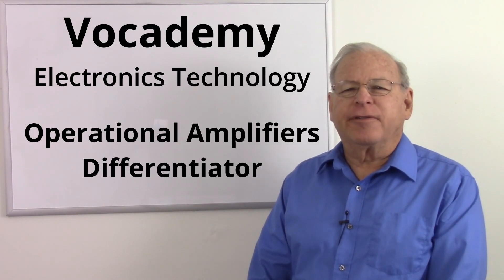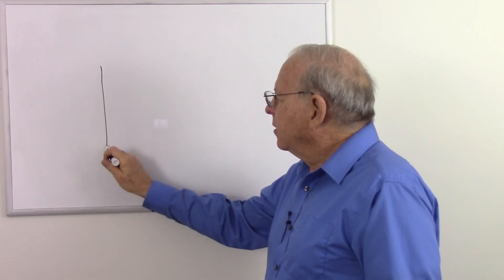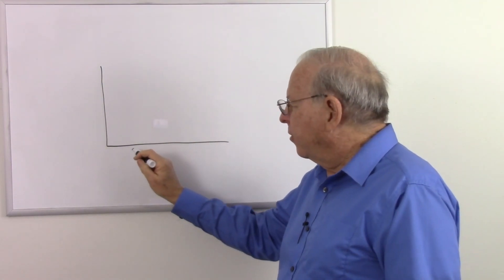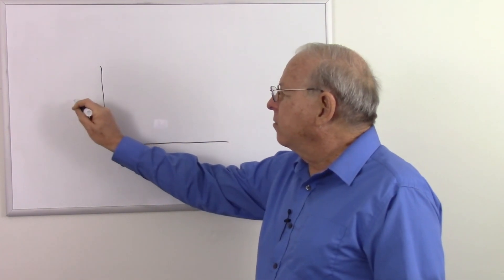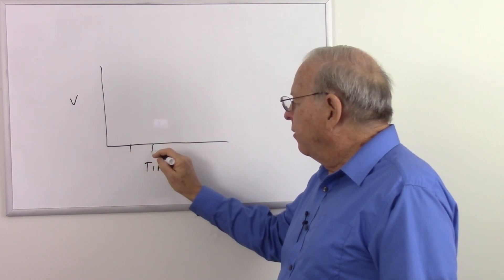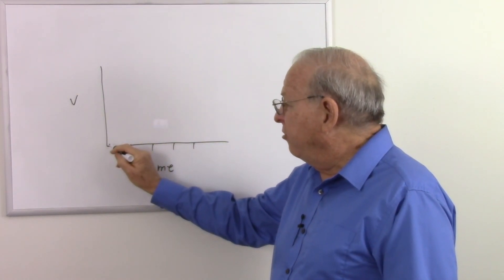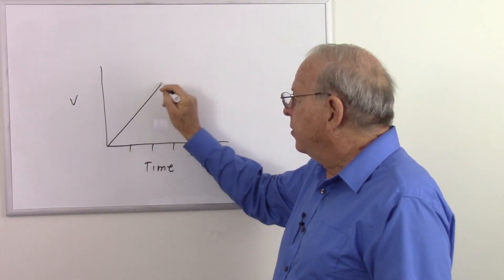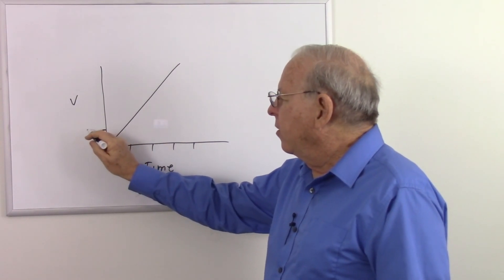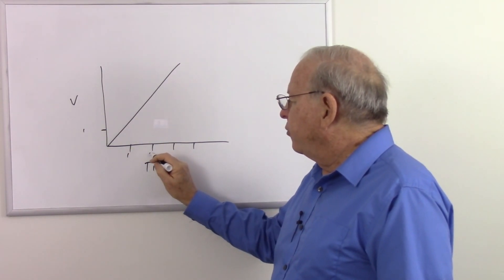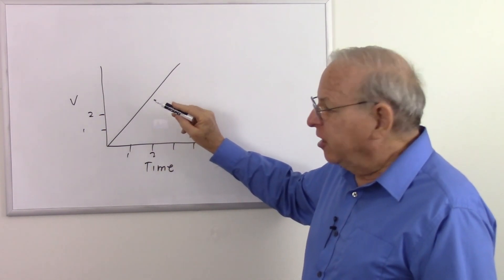Today I am going to talk about the op-amp differentiator. The differentiator takes a signal that changes linearly with time. Here is time on the horizontal axis and voltage on the vertical axis. If we have equal intervals in time and an input voltage that changes linearly — say after one millisecond it changes by one millivolt, after two milliseconds by two millivolts — the change is linear and we get a straight line.